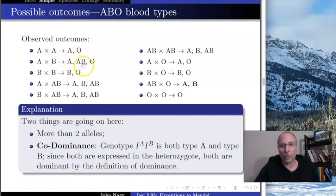Sorry, there's a mistake there. There should also be a B there. The situation B cross B can produce B or O. In this situation, A cross AB can produce either AB or A, but not O in this case.